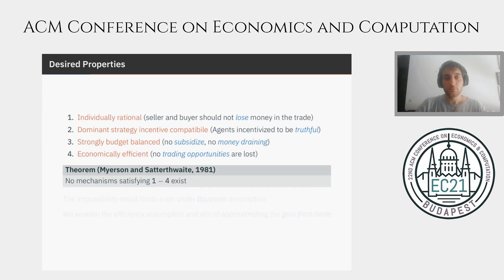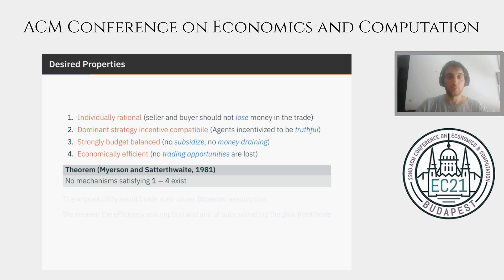Now, this is too good to be true. In fact, there is the very famous impossibility theorem by Myerson and Satterthwaite from the 80s that says that no mechanism satisfying properties one through four exists. Actually, this impossibility result holds even under a weaker assumption: when there is an underlying distribution determining the valuations of the seller and the buyer that is known to the mechanism designer, and all those properties — apart from the fourth one, which has to be enforced only in expectation — still cannot all be satisfied simultaneously.